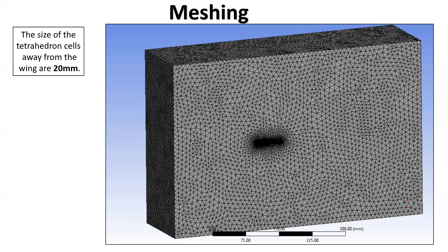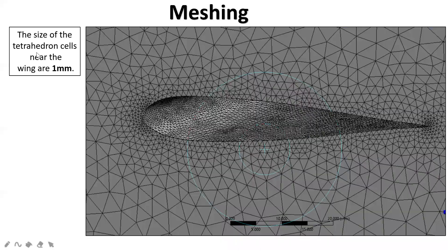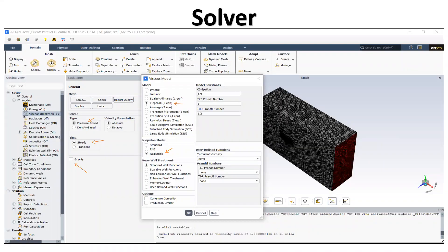Next is the meshing part in ANSYS. We selected tetrahedral cells for meshing. The mesh size away from the wing is 20 millimeters and the mesh size near the wing is 1 millimeter, giving a fine mesh near the wing surface. The next part will be presented by my team partner Sovic.